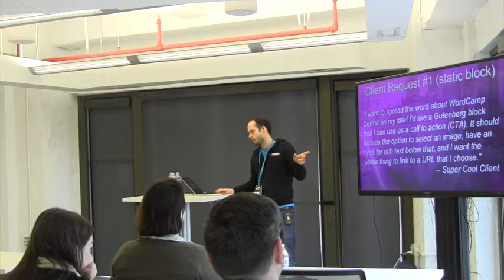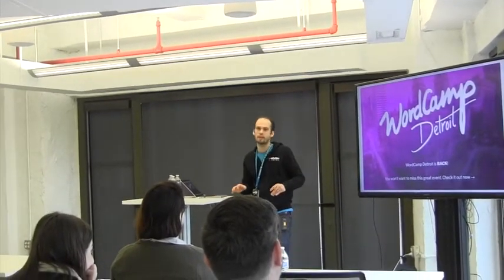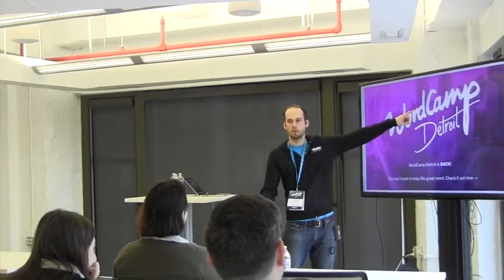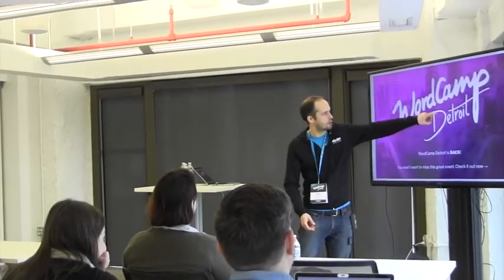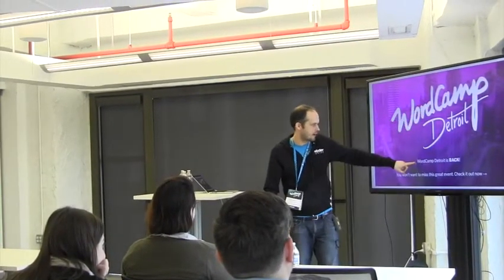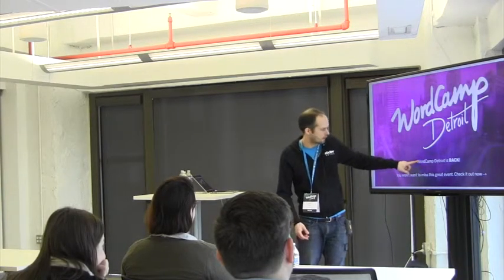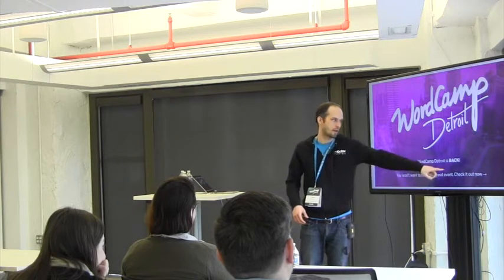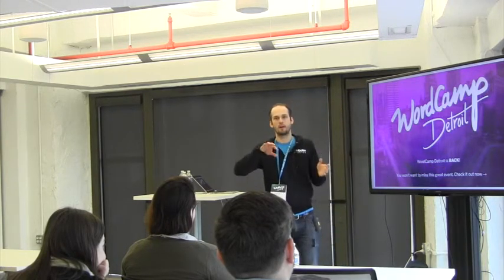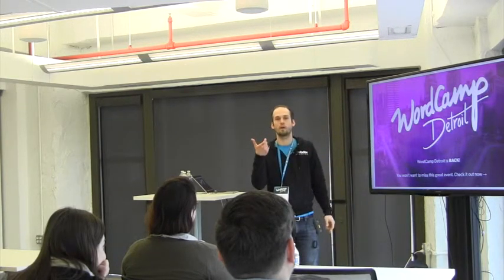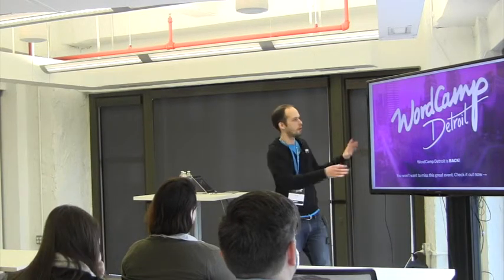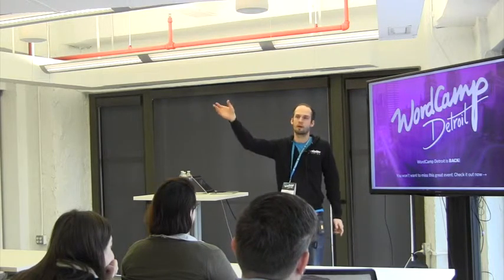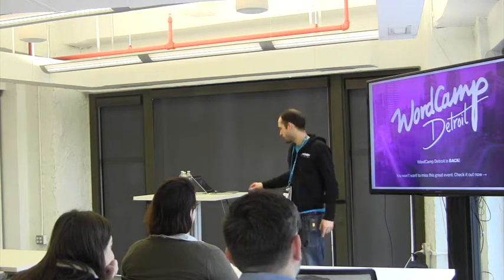This is the first challenge we'll code up today. The client has chosen an image at the top, and below that there's a rich text field where they can enter text and create new paragraphs. Behind the scenes there'll be one other field to specify a URL, so if anybody clicks on this call-to-action banner it will link them to whatever URL the client specified.